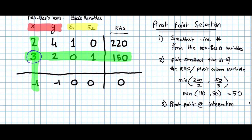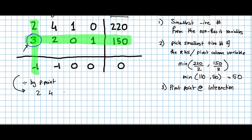Corresponding to the pivot column and pivot row, our pivot point is their intersection. Once we have the pivot point selected, we apply Gauss-Jordan elimination. Since we have to move the basis towards this point, we divide the entire pivot row by the value of the pivot point. Dividing by the pivot point of 3, the first row stays as [2, 4, 1, 0 | 220], the second row becomes [1, 2/3, 0, 1/3 | 50], and the objective row remains [−1, −1, 0, 0 | 0].